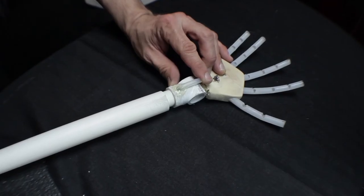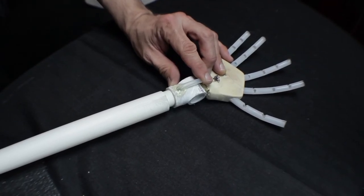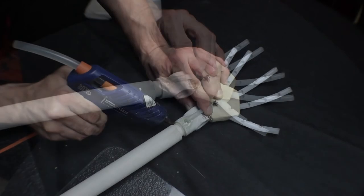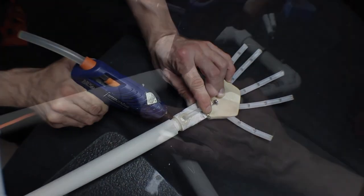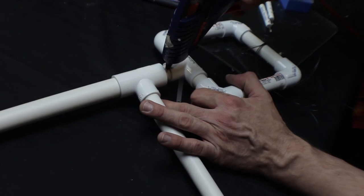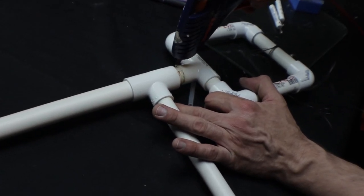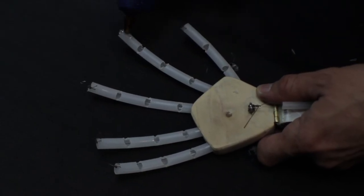Secure any and all joints that aren't supposed to move with hot glue. Secure all your finger knots with hot glue for reinforcement.